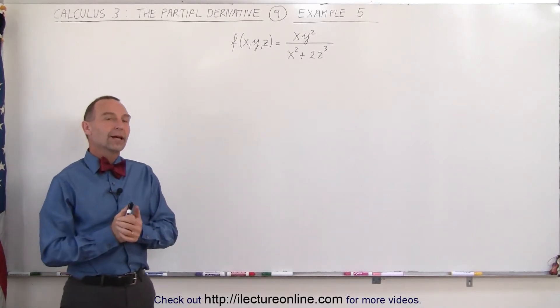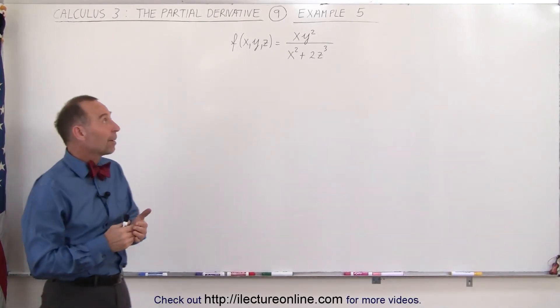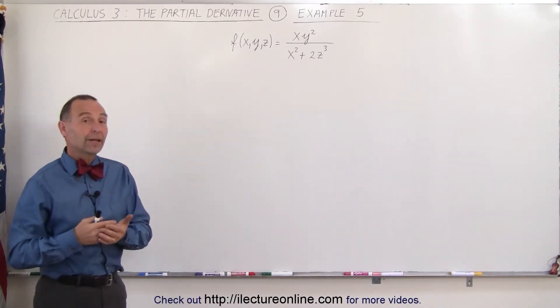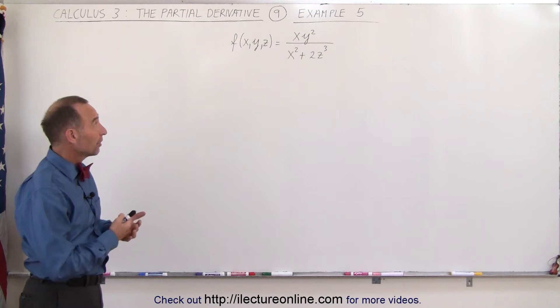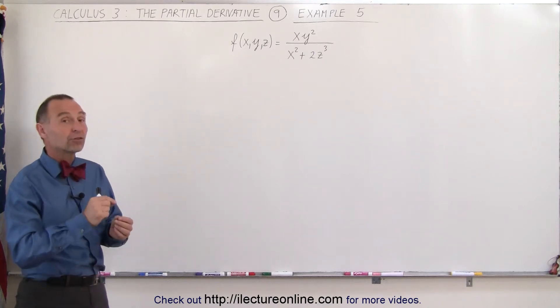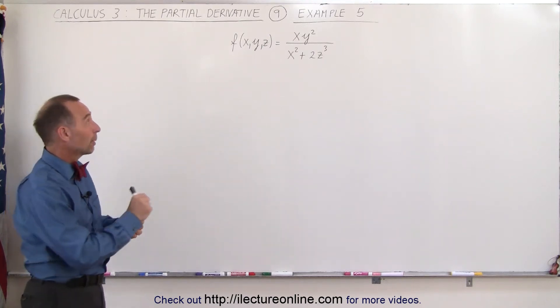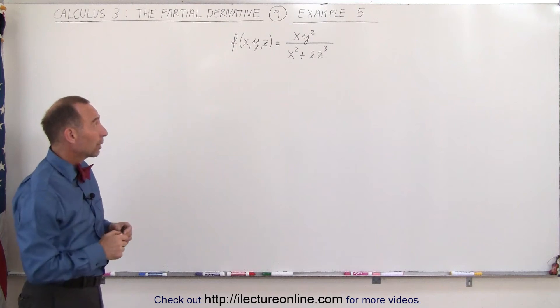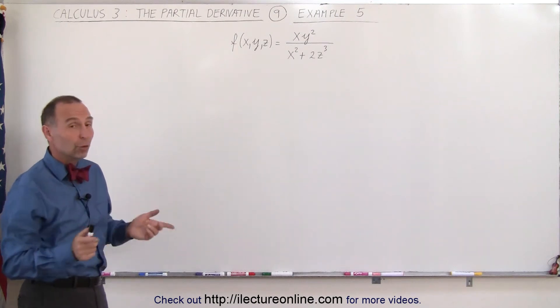Welcome to Electron Online. In this example, we have a function that is dependent on three variables x, y, and z. We're going to take the partial derivative with respect to x, then with respect to y, and then with respect to z.